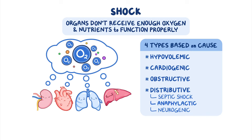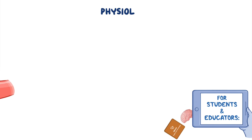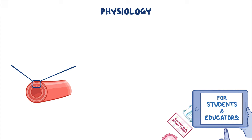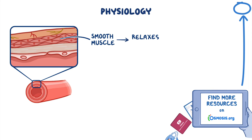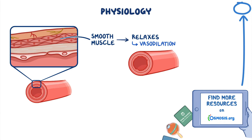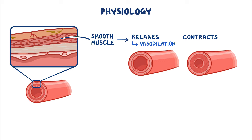To understand anaphylactic shock, let's quickly review the physiology of blood vessels, which contain smooth muscle in their walls. When the smooth muscle relaxes, it increases the diameter of blood vessels, called vasodilation. On the other hand, when smooth muscle contracts, the diameter of blood vessels decreases, called vasoconstriction.